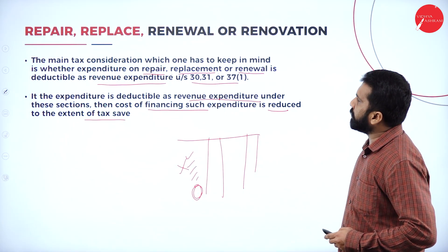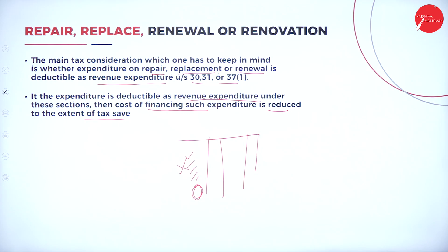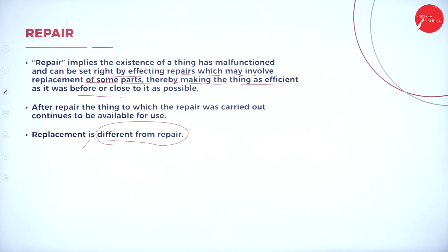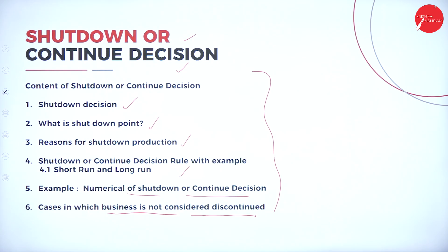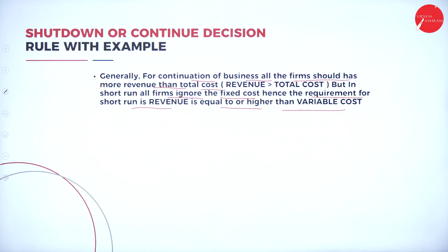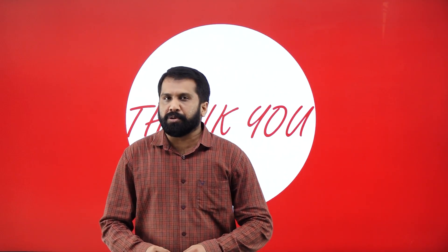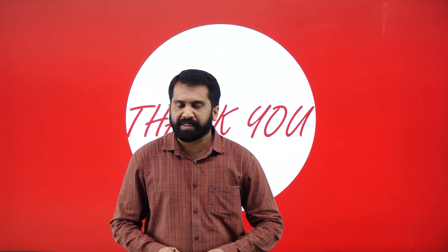So I will go back to all the previous slides so that you can take a screenshot. These are your agenda: repair, replacement, renewal or renovation; difference between revenue and capital expenditure; repair and replacement; shutdown or continue; what is a shutdown decision; what is a shutdown point; shutdown or continue decision; and the short-run rule for shutdown or continue. This is all about today's session. We are done with the 11th session of Corporate Tax Planning, and with this, we have concluded unit number 4. Thank you.